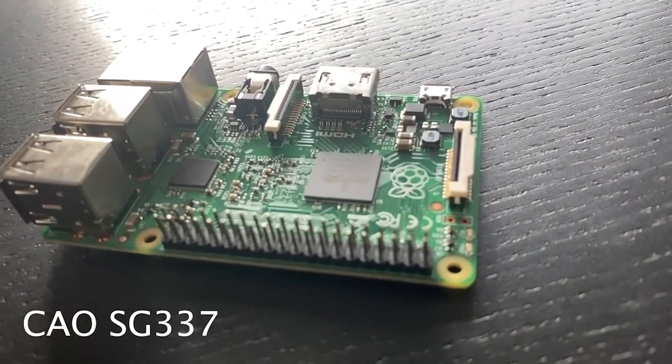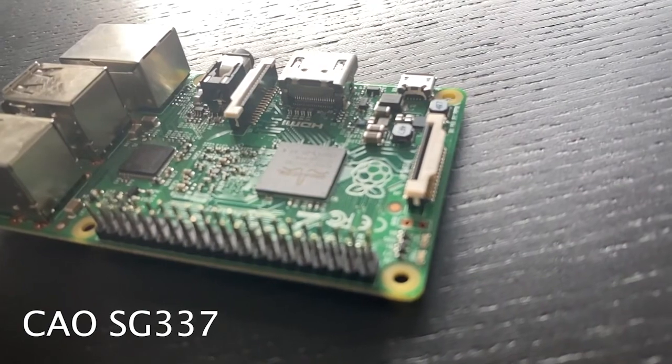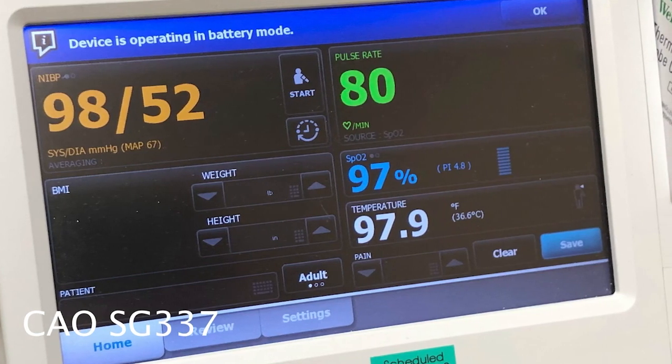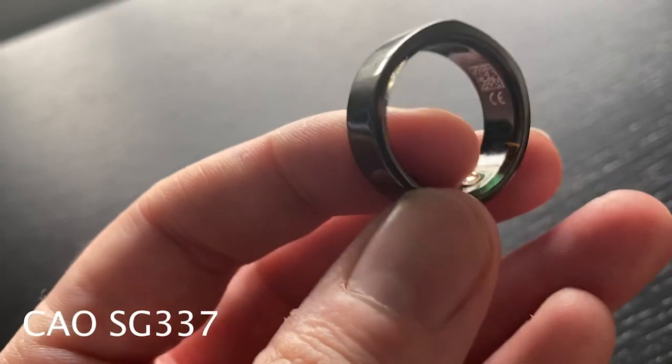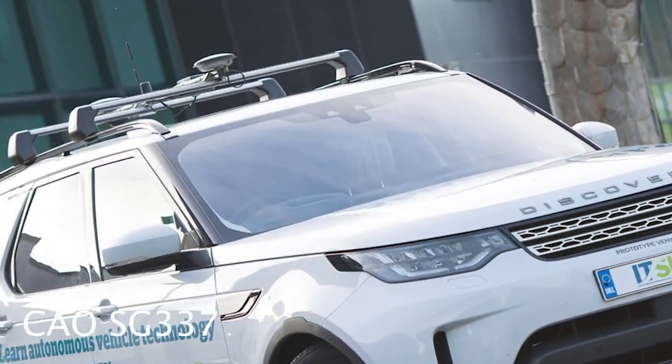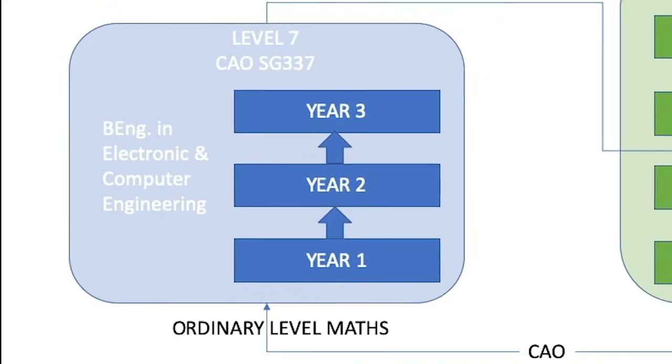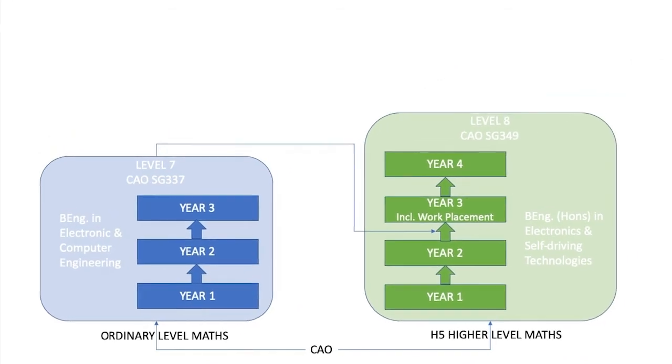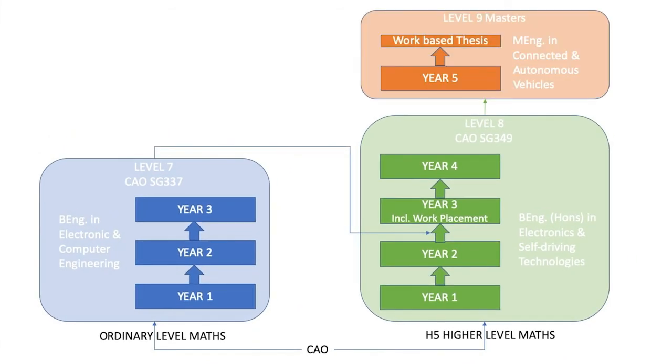If you are interested in technology or engineering, but are not doing higher level maths, why not consider our level 7 in electronic and computer engineering? This is a three-year program that looks at the design and development of embedded electronic systems. These are the medical devices that keeps us healthy, the consumer devices that keeps us entertained, or the controlled systems that keeps us safe on the road. You can then progress onto the level 8 in electronics and self-driving technologies and from there to the masters. Check out the link below for more information.